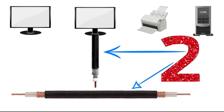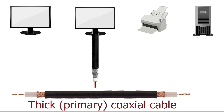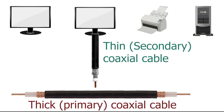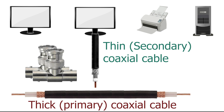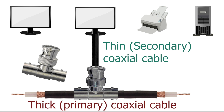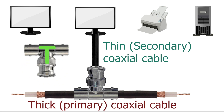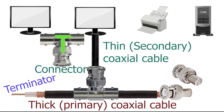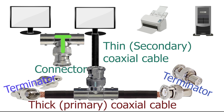It uses two types of coaxial cables to connect nodes. It uses a thick coaxial cable as the primary cable and thin coaxial cables to give connections from the primary cable. It uses BNC connectors to join thin coaxial cables to the primary cable. Because of its shape, a BNC connector is also called a T connector.